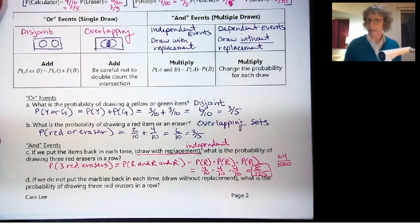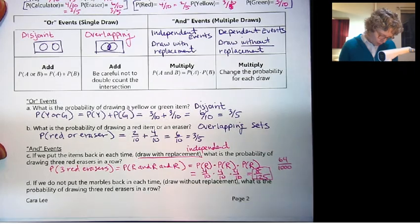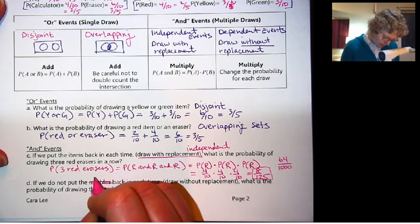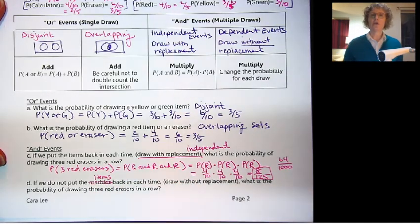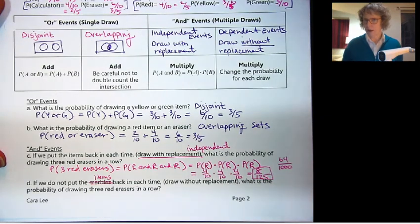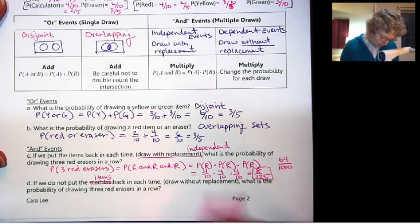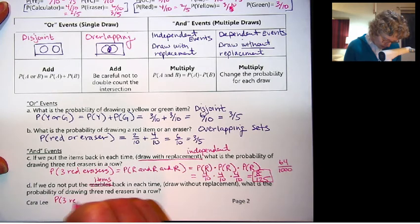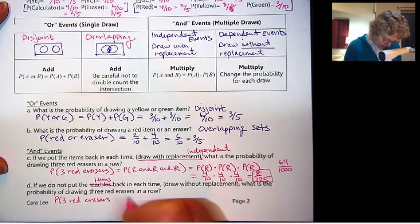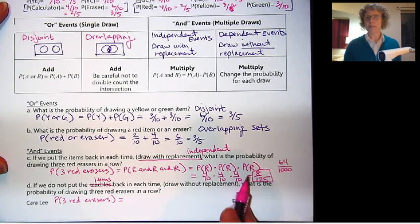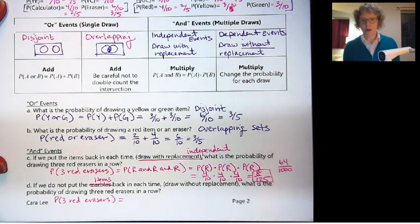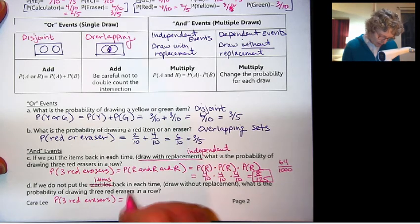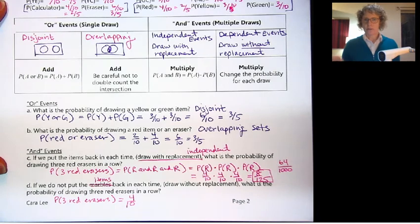So that's putting the eraser back in each time. What if we don't put the items back in each time? That's drawing without replacement. So someone's actually drawing a prize, and they get to keep it. What's the probability of drawing 3 red erasers in a row? Same idea, probability of 3 red erasers. But now, it's not the same every time. These are dependent events. It depends on what was drawn before.